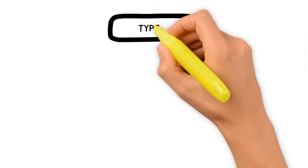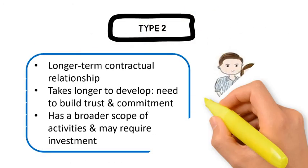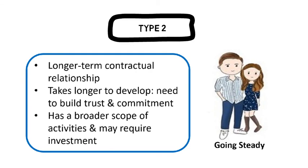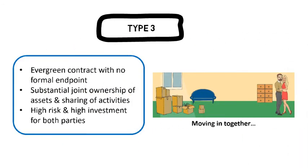A Type 2 relationship is a longer-term contractual relationship that takes a longer time to develop and requires building trust and commitment. There will be a broader scope of activities possible and may require investment of time and effort from both parties — for example, a multi-year contract for all Asian freight lanes with a guaranteed volume and performance incentives. A Type 3 relationship is based on an evergreen contract with no formal endpoint; unless one party calls it quits, the contract will continue in perpetuity. By this stage, there will be substantial joint ownership of assets and shared activities, with a higher level of risk and investment for both parties — for example, a dedicated transportation fleet and resources for pick-up and shipper locations, break bulk, etc.